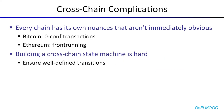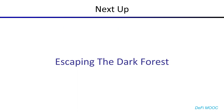This example shows that with multiple chains, we get multiple layers of complications. Each chain has its own nuances that aren't immediately obvious to new developers — on Bitcoin, zero-confirmation transactions may be confusing for someone coming from Ethereum, while on Ethereum, frontrunning is very well-known, but on Bitcoin that's not really a thing. Additionally, building a cross-chain state machine is hard, especially ensuring well-defined transitions between all the states when you start getting into dozens of states and multiple dozens of transitions. And with that, we end segment 5, and I will see you in segment 6: Escaping the Dark Forest.